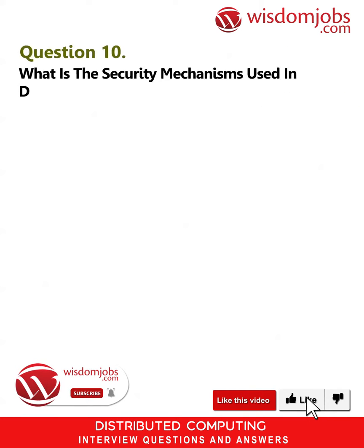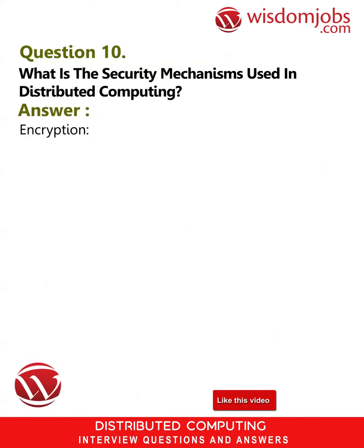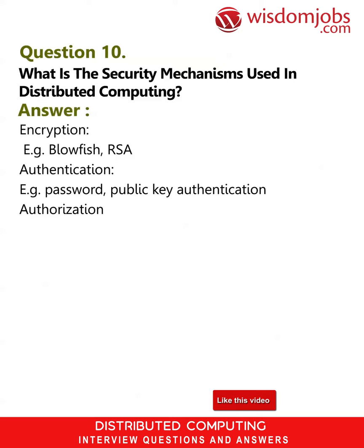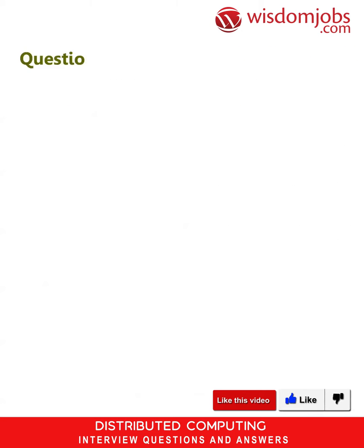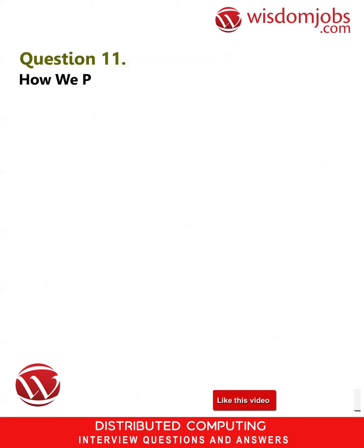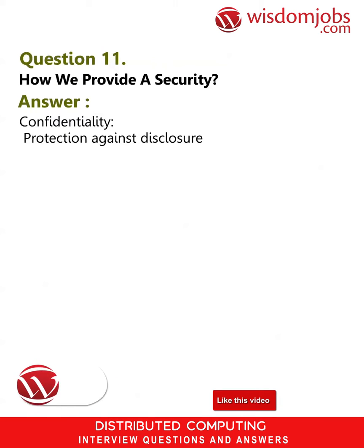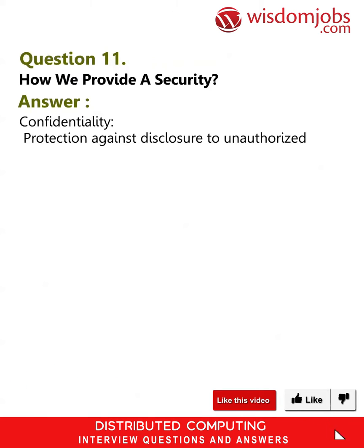Question 10: What are the security mechanisms used in distributed computing? Answer: Encryption — for example, Blowfish, RSA. Authentication — for example, password, public key authentication. Authorization — for example, access control lists.